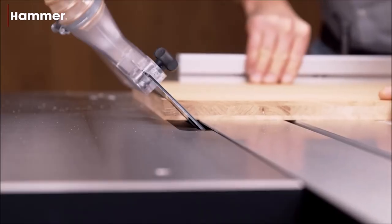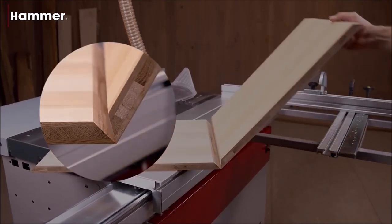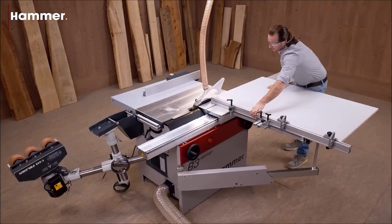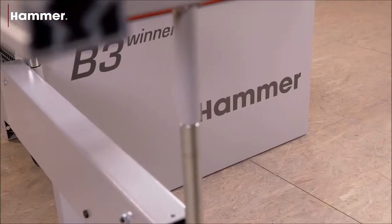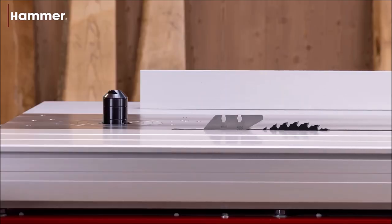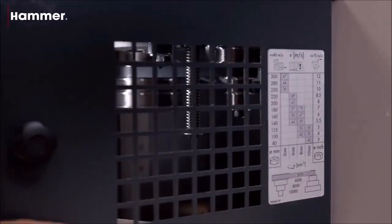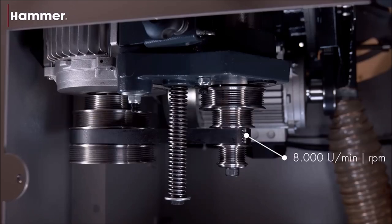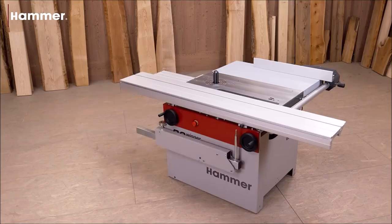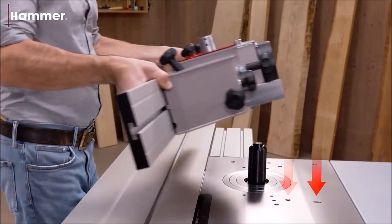The crosscut fence is adjustable to any position between plus 45 degrees and minus 45 degrees, enabling precise angled and miter cuts. The combination of an aluminum sliding table and crosscut stop with a magnifying glass ensures highly precise settings and accurate results.